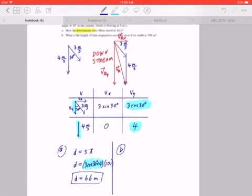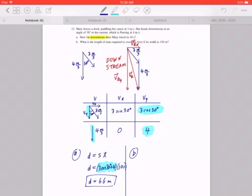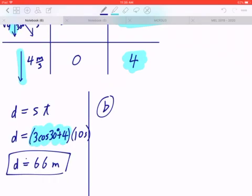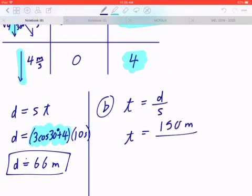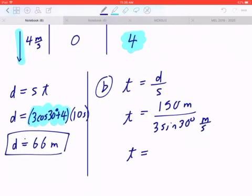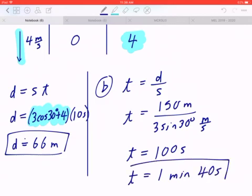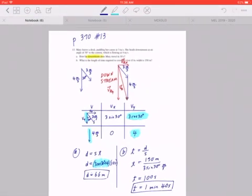In part B, they're asking you, what is the length of time to cross the river if its width is 150 meters? So in this case, to find time, you have to take the distance divided by speed. The distance is given as 150 meters. To find the speed, you're looking at the horizontal component, which will be 3 sine of 30. If you work this out, it's going to be exactly 100 seconds, or in terms of minutes and seconds, 1 minute and 40 seconds. I hope this makes sense.